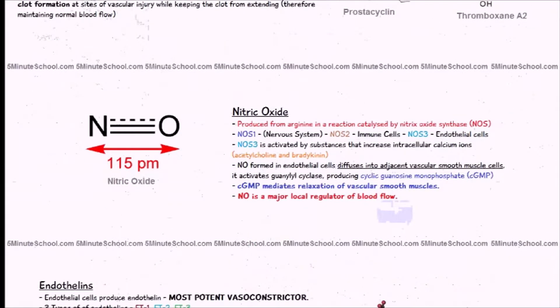Now we're going to talk about nitric oxide. It's produced from arginine in a reaction which is catalyzed by an enzyme called nitric oxide synthase.